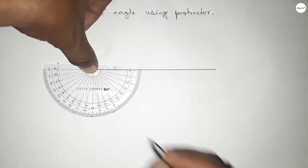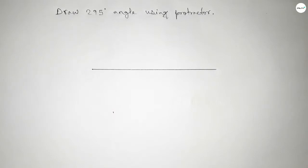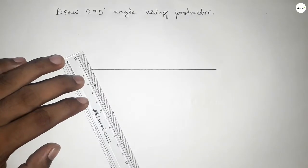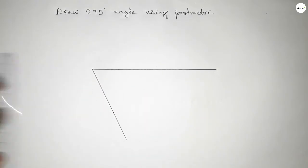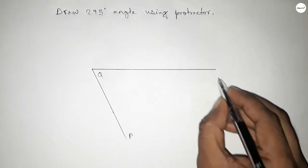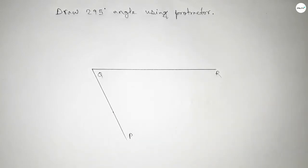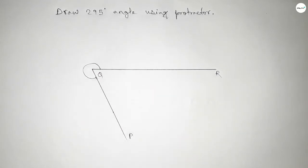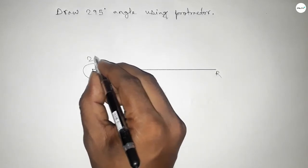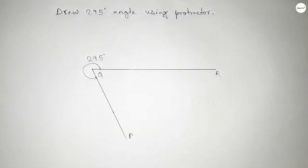So by joining this to get 295 degree angle. So this is P, Q, and R. So angle PQR. Okay, so this is 295 degree angle.